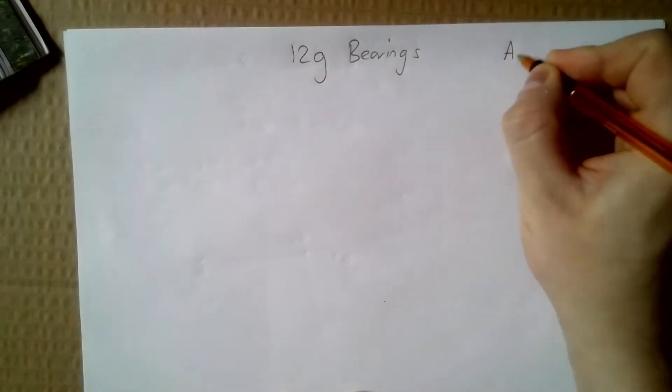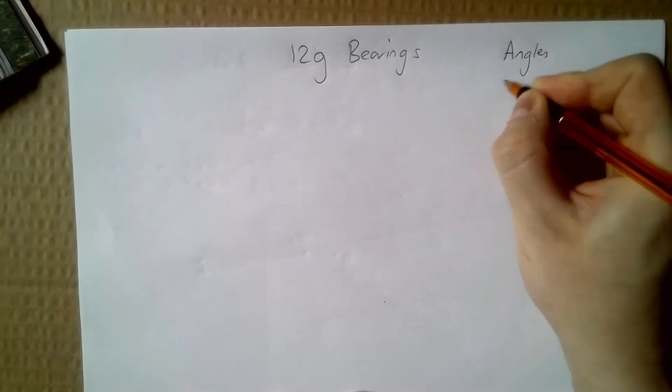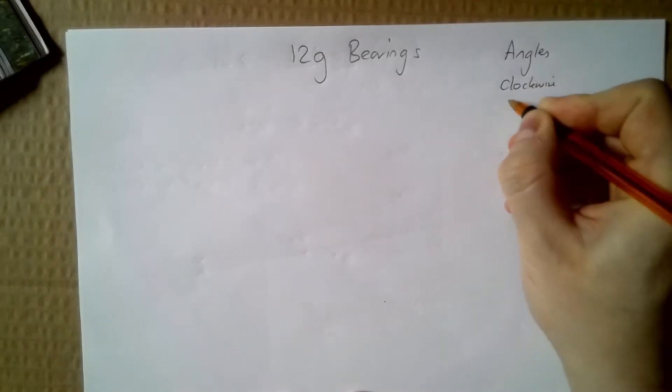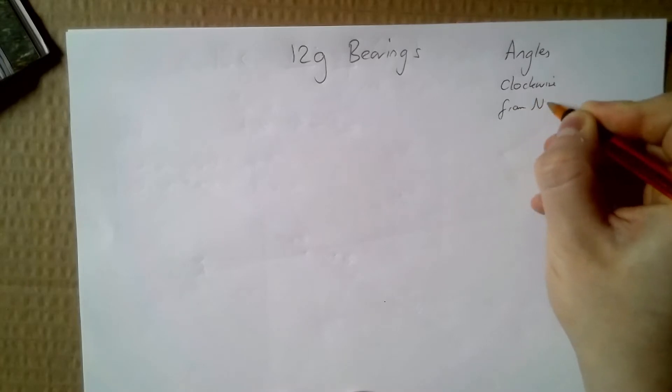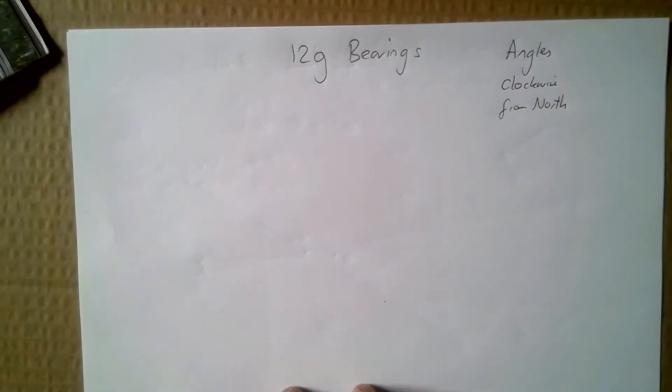So bearings are angles clockwise from north. Every time you measure or need to draw a bearing, you need to be thinking of angles you have to go clockwise and you have to start from north.